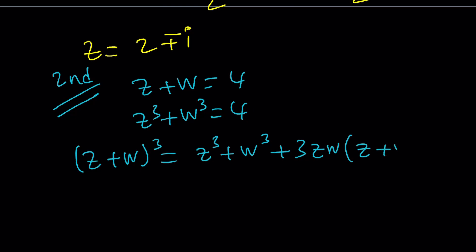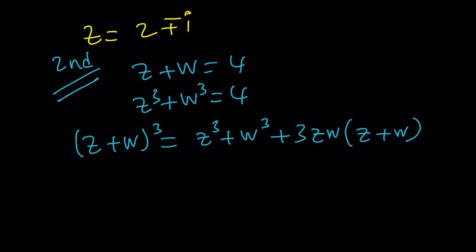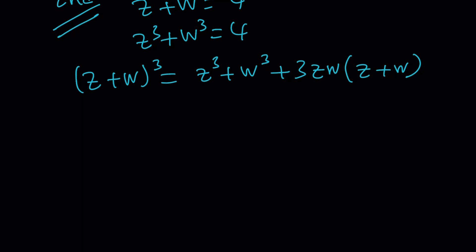And we can write this as z cubed plus w cubed plus 3zw. Again, I'm using my identity. One of my identities, one of my favorite identities. Instead of expanding the whole thing and then try to factor it, I like to write it that way because it's already partially factored. But notice something here.